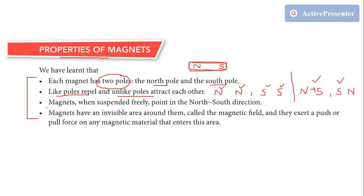The third property is: when we suspend the magnet freely, it points towards the north and south direction. So a freely suspended magnet always aligns itself in the north-south direction.